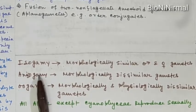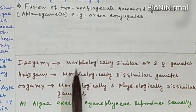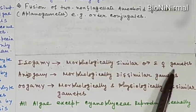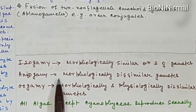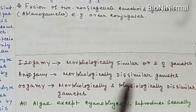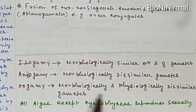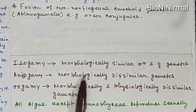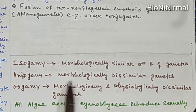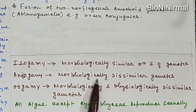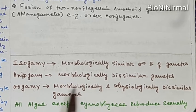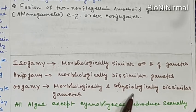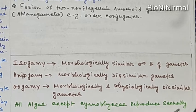Key points summary: In isogamy, morphologically similar male and female gametes unite. In anisogamy, morphologically dissimilar gametes unite. In oogamy, gametes are morphologically and physiologically dissimilar. The basic difference between anisogamy and oogamy is that in anisogamy gametes are only morphologically dissimilar, while in oogamy they are both morphologically and physiologically dissimilar. All algae except Cyanophyceae reproduce sexually.